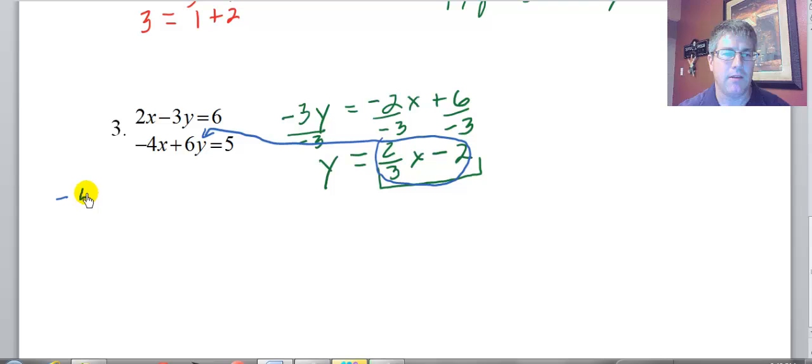So I'm going to take this 2 thirds x minus 2 because it's y, and I'm going to put it right in there. So I have negative 4x plus 6y or 2 thirds x minus 2 equals 5. And I'm going to solve this for x. Negative 4x, 6 times 2 thirds, 6 over 3 is 2, so that's plus 4x, and 6 times negative 2 is negative 12, equals 5.